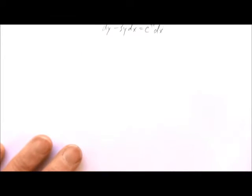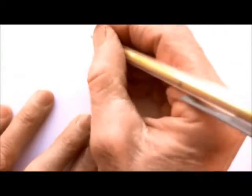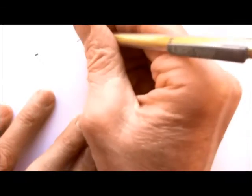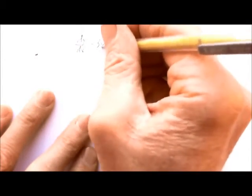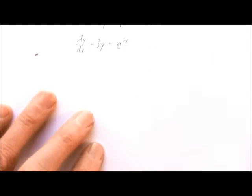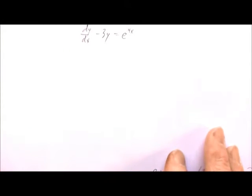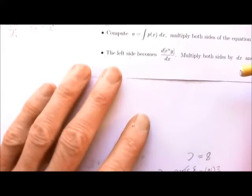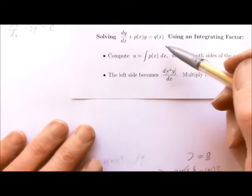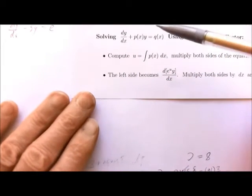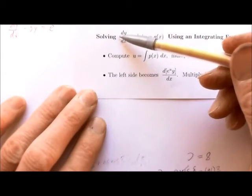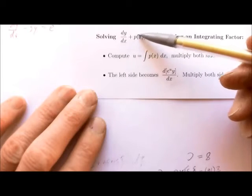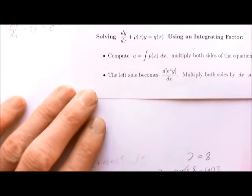Let's go back to the differential equation itself, which is dy/dx minus 3y equals e^(4x). When we want to use the integrating factor method, we're going to use our formula sheet. It gives us directions for solving something that looks like this first order linear equation, where 1 is our a₁(x), the coefficient of y is our a₀(x), and the right-hand side is f(x).